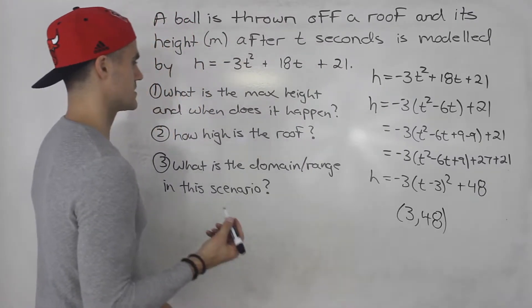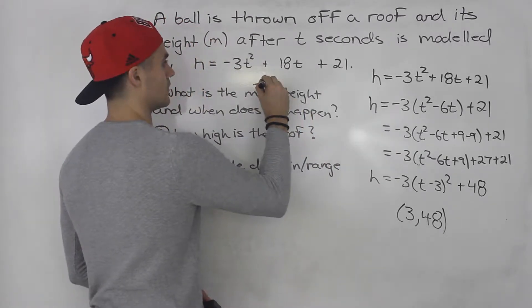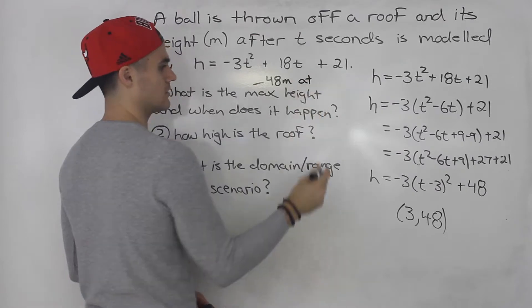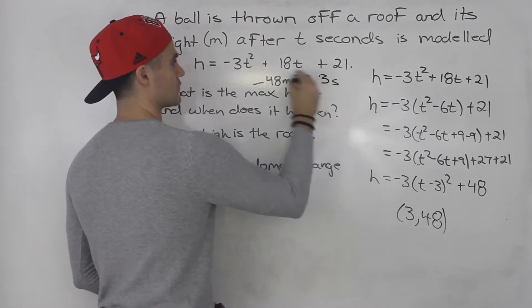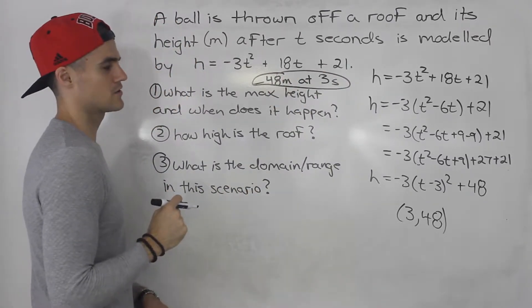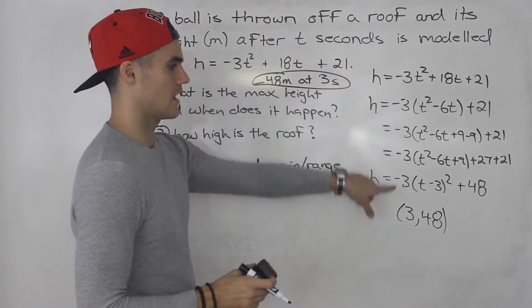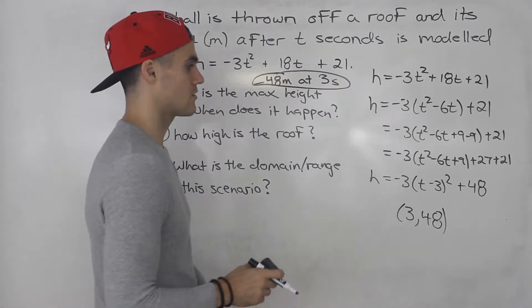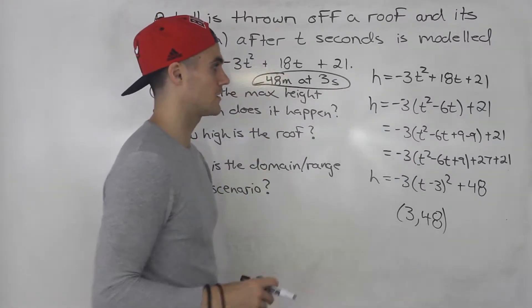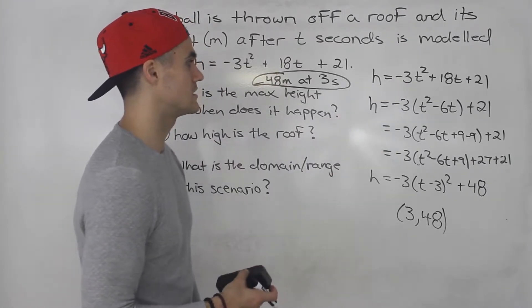So what is the max height that the ball reaches? 48 meters. And when does it happen? Three seconds after it is thrown. So 48 meters at three seconds. That's the answer to number one. We took the height and just completed the square, put it into vertex form in order to get that maximum value. And we know it's a maximum value because this parabola is opening down. The A value is negative.